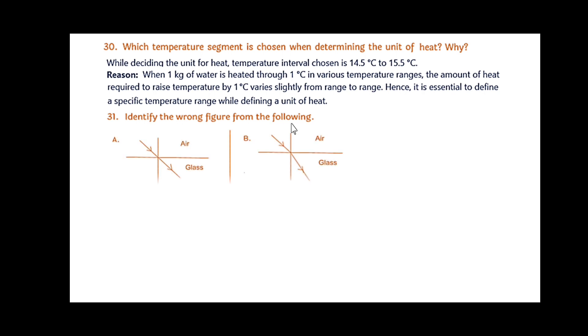Identify the wrong figure from the following. Here two figures are shown. The light rays entering from air to glass. Air is rarer, glass is denser. In the first figure, there is no deviation. The rays passing from one media to another. In the second, when the rays pass from air to glass, it is bending towards the normal. This is the right figure B. And A is wrong. The wrong figure is A, which is shown here without the deviation, it is passing or moving away from the normal.